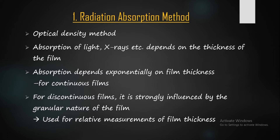For discontinuous films, we cannot find exactly what the thickness is, because discontinuity means non-uniform — we can't say that the thickness is the same throughout. However, we can compare and find out a relative measurement of average film thickness. That is the difference between continuous and discontinuous films. Generally, for higher-end applications we use continuous films, and absorption depends exponentially on film thickness.